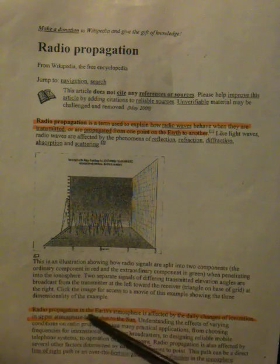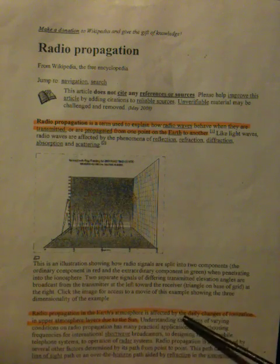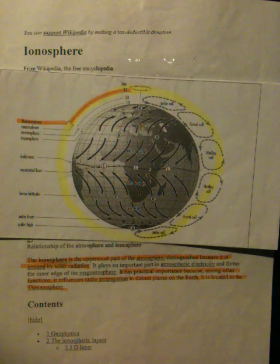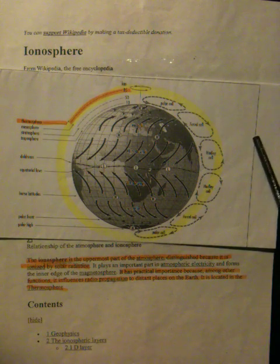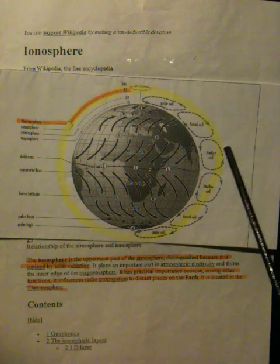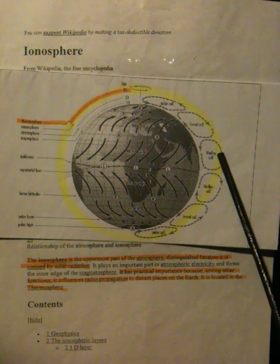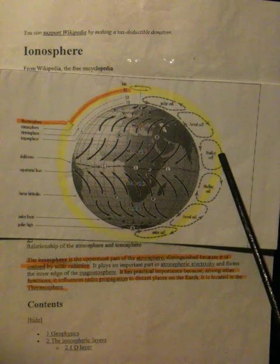Radio propagation in the Earth's atmosphere is affected by daily changes of ionization in the upper atmosphere layers due to the sun. So basically what they're saying is occasionally the sun will burst forth a flare, and since the Earth is only tuned to deflect a certain amount of electricity, whenever the sun produces excess electricity, that excess electricity gets in.